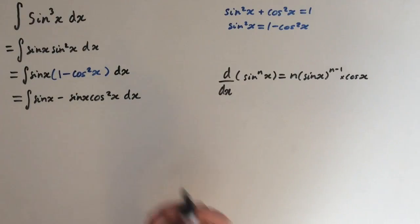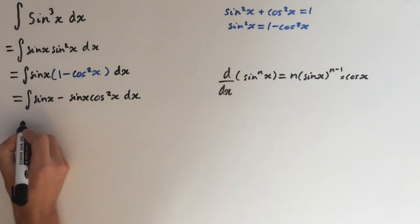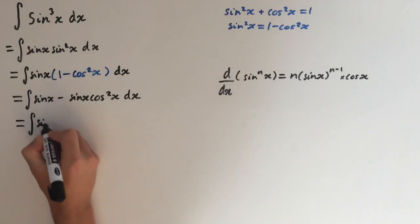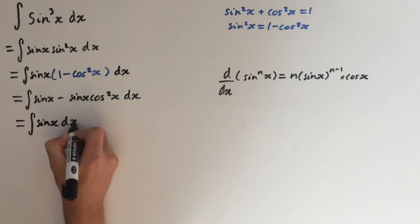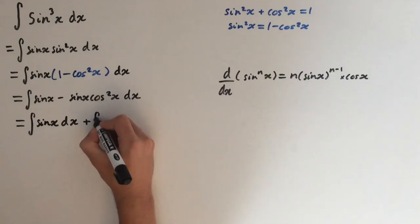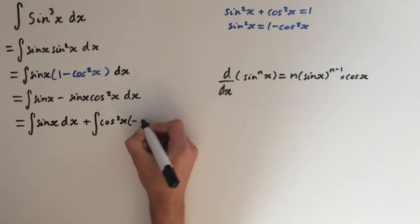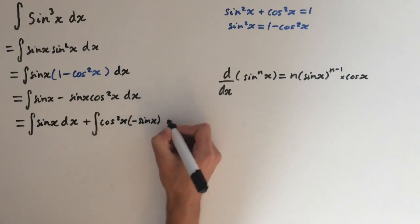do it by substitution just to show you clearly step by step. So I'm going to split this into two integrals: integral of sine of x dx plus integral of cosine squared x times minus sine of x dx.